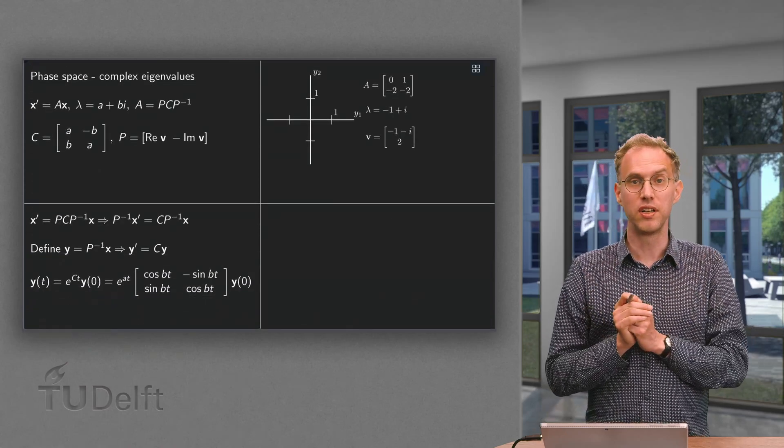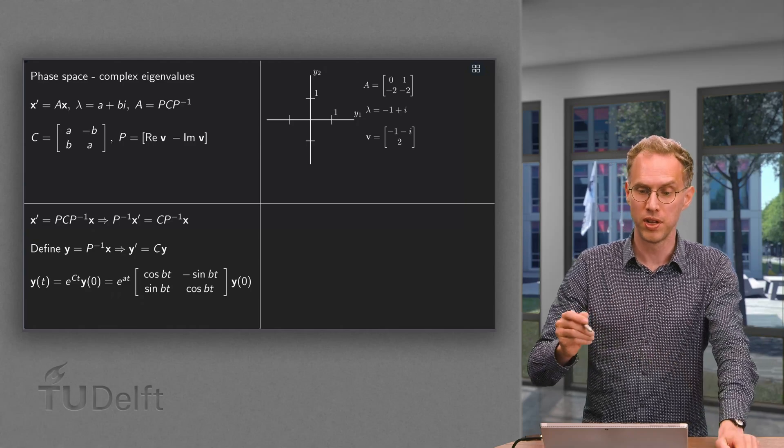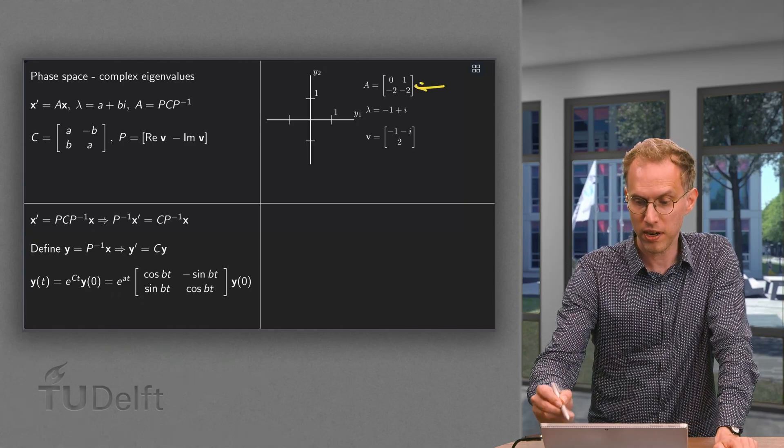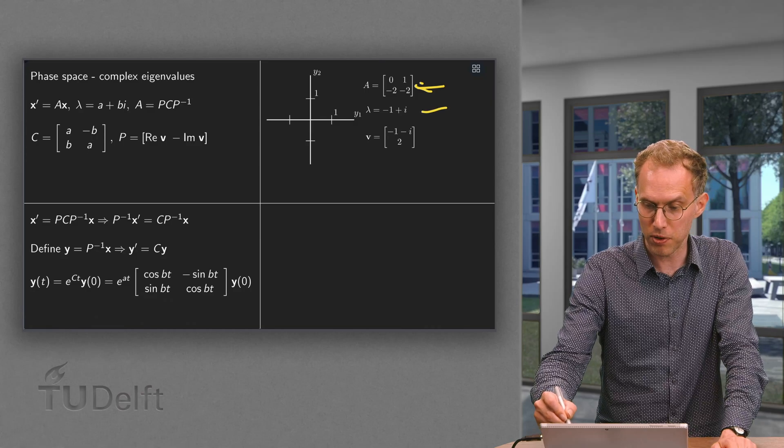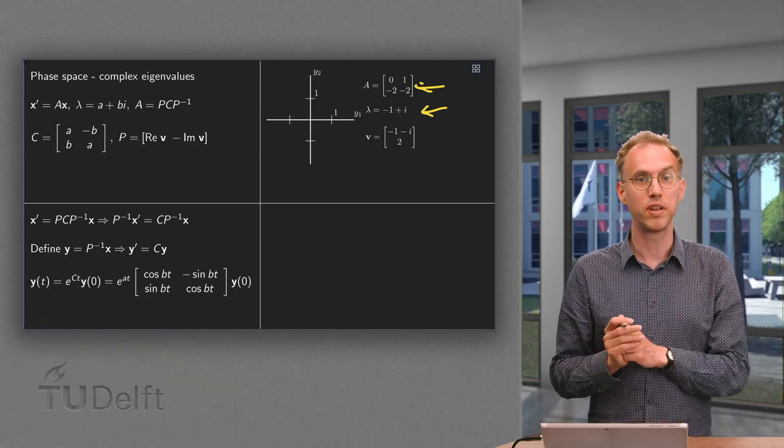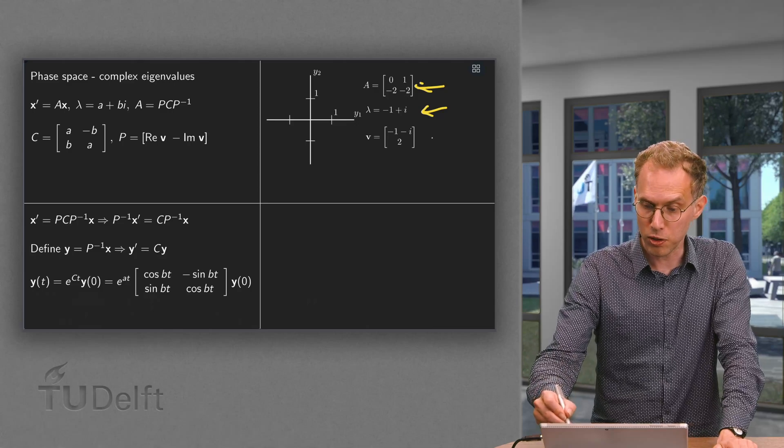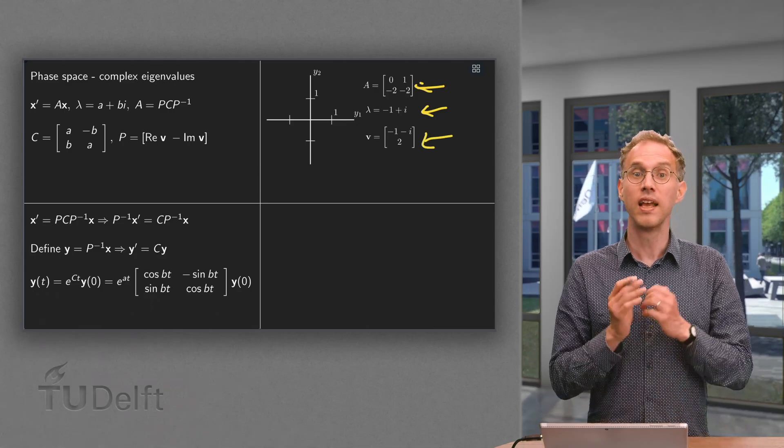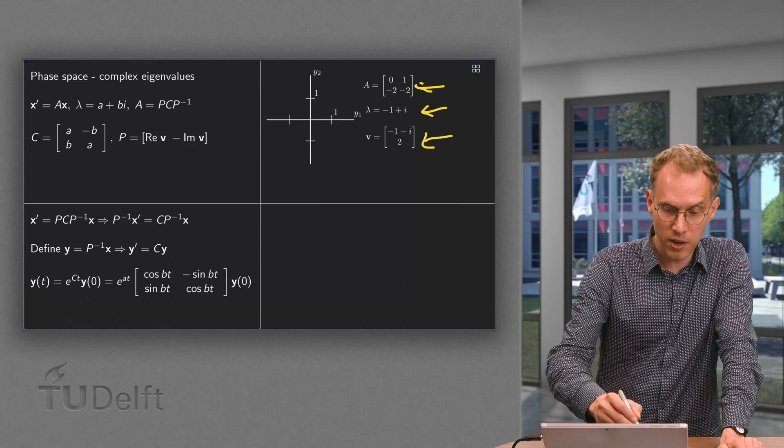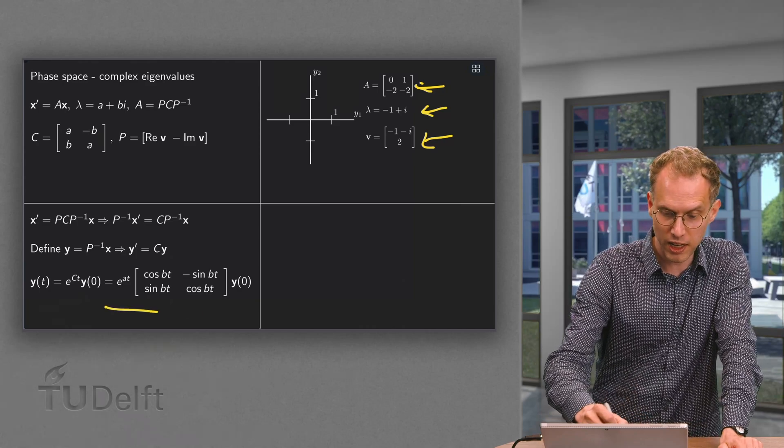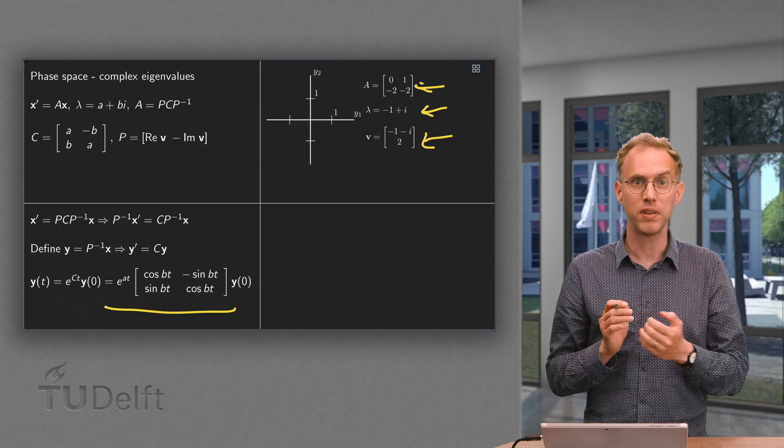So how then does the face space look in an explicit example? Say we have this a over here. Say we have already found lambda minus 1 plus i. So the other one is lambda equals minus 1 minus i. But we will use this one with the corresponding vector v. How can we then draw the face space? Well, our solution looks like e to the power at times a rotation matrix. So what's going to happen?